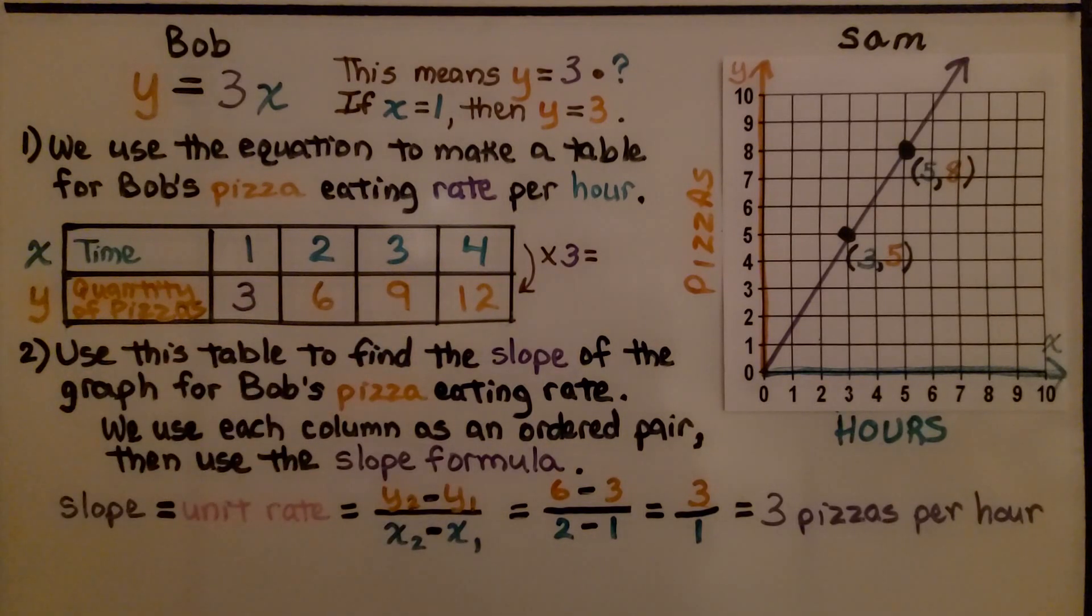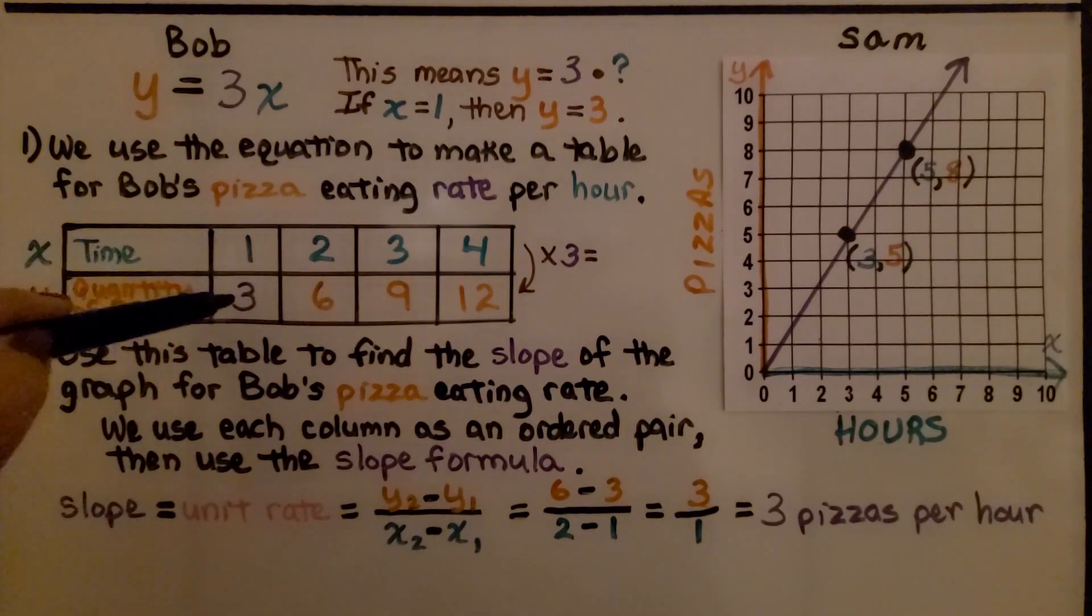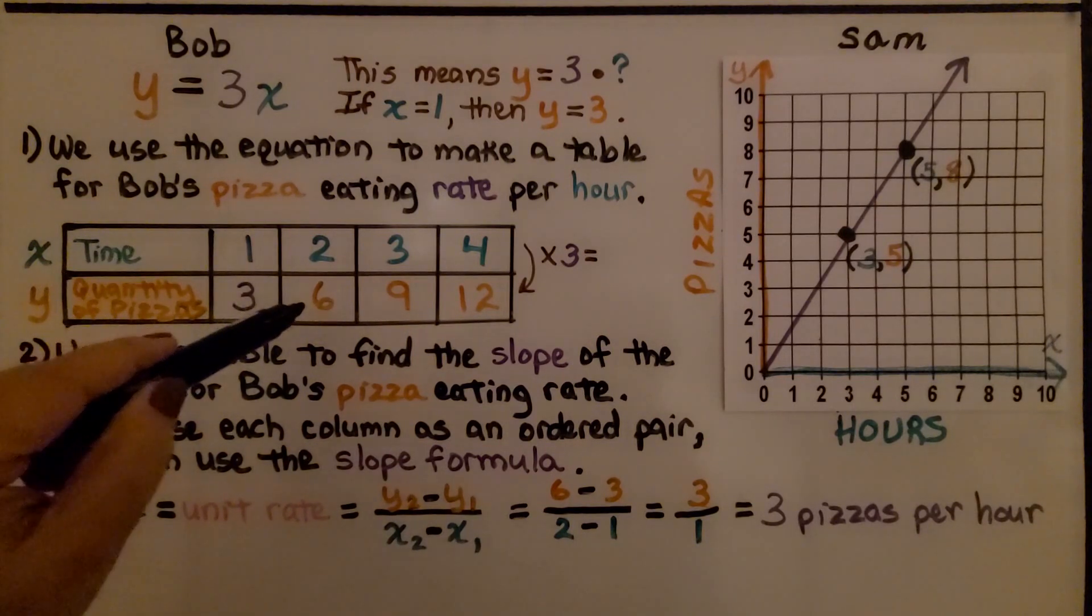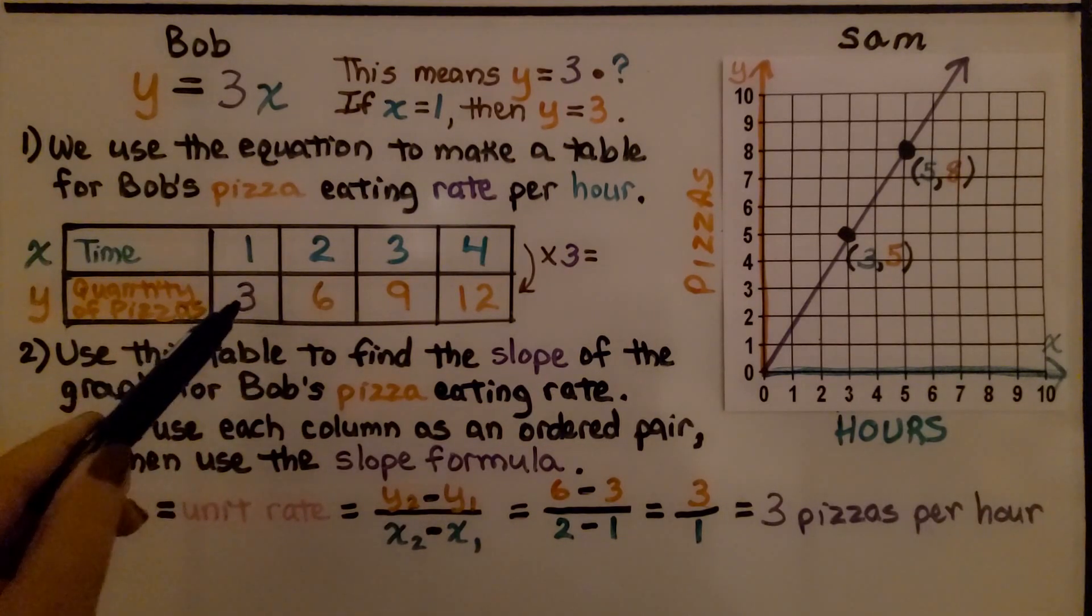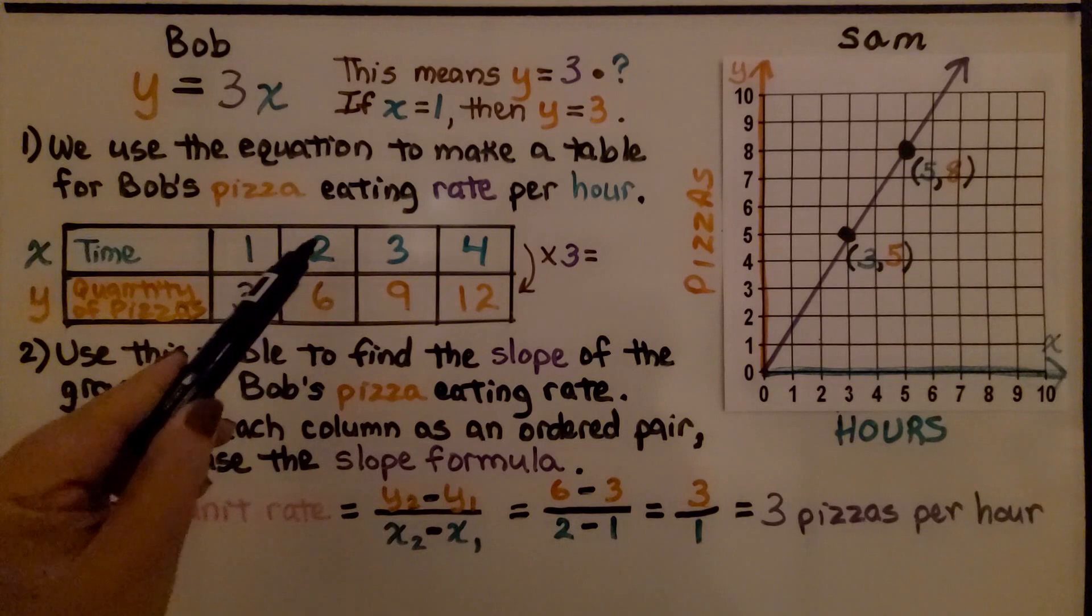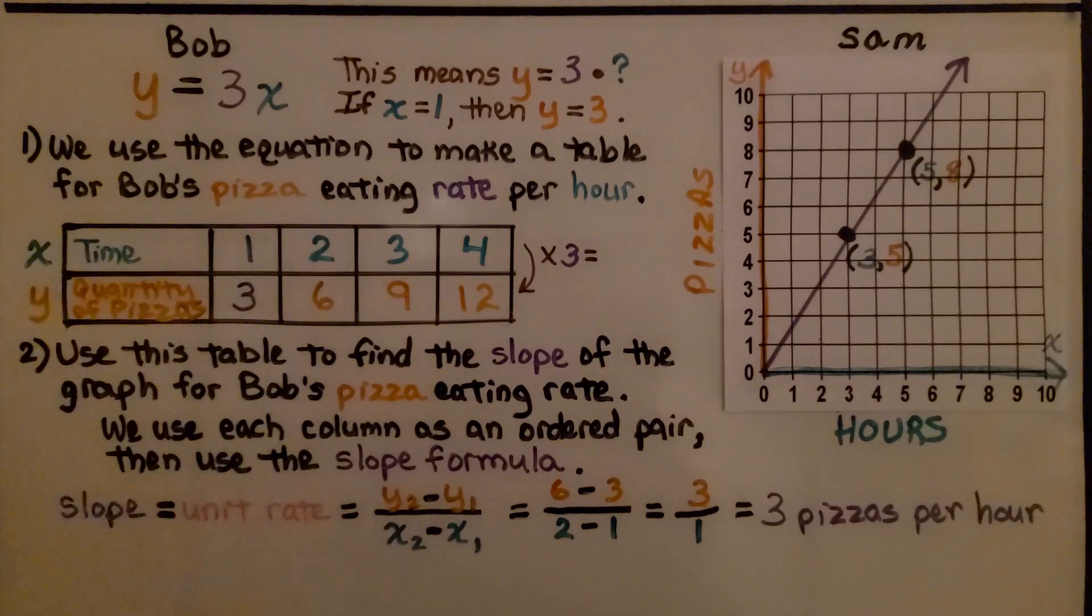We use this table to find the slope of the graph for Bob's pizza eating rate. We use each column as an ordered pair, then use the slope formula. Slope equals unit rate, which equals the second y value minus the first y value over the second x value minus the first x value. We've got a 3 for y and a 1 for x and a 6 for y and a 2 for x. The second y minus the first y, so we have 6 minus 3, and the second x minus the first x, we're going to get 3 over 1.